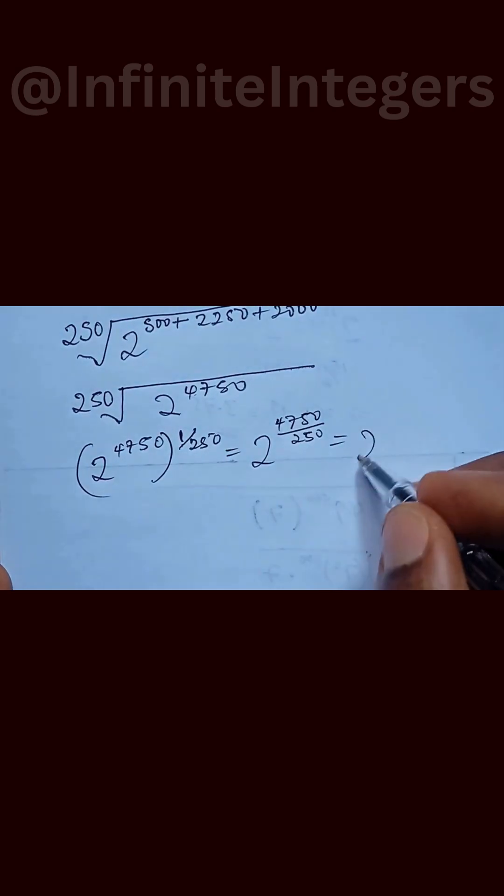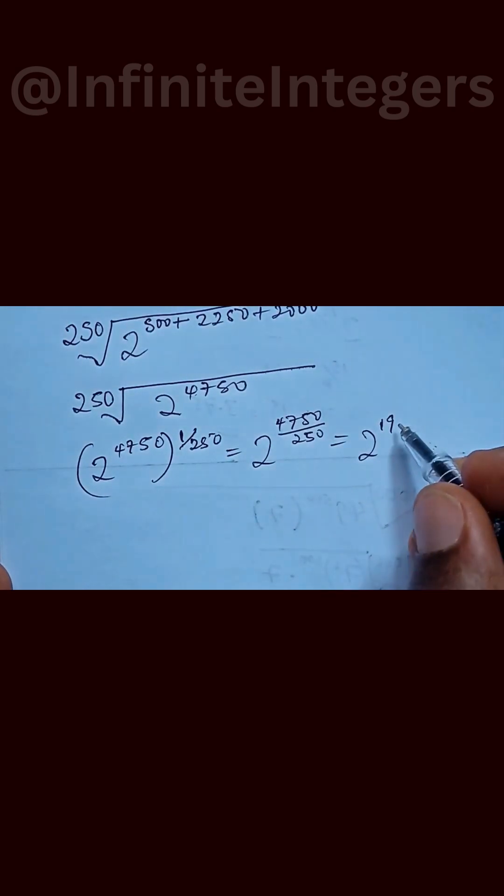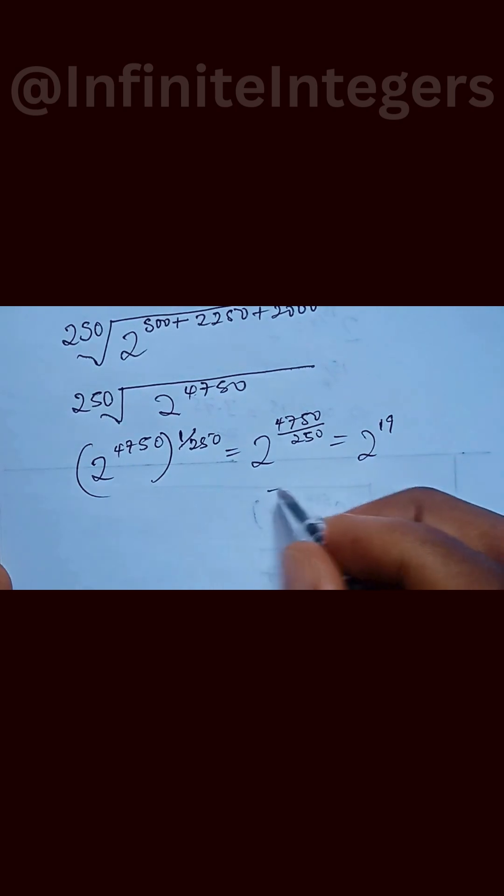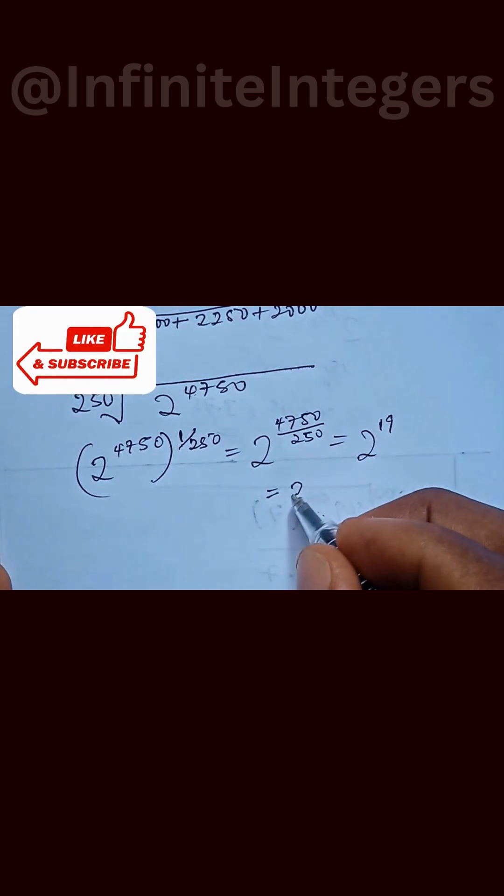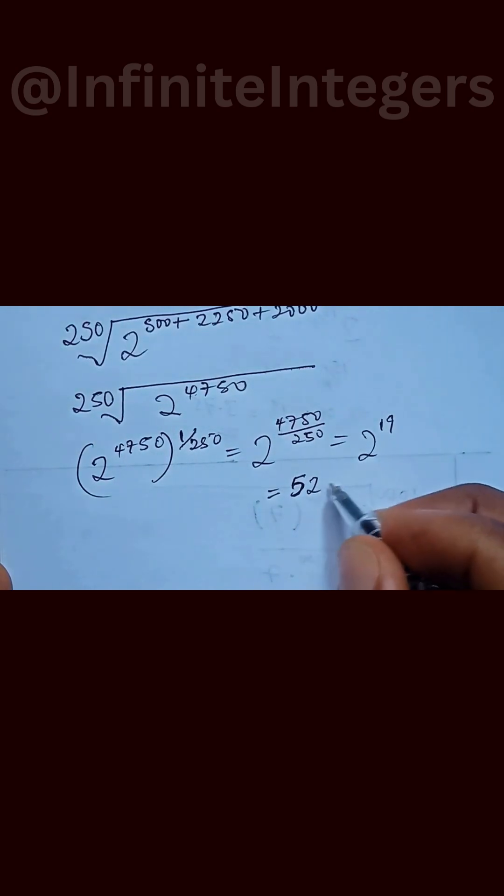And that is given by, if we simplify this, we have 2 to the power of 19, which is simply equal to 524,288.